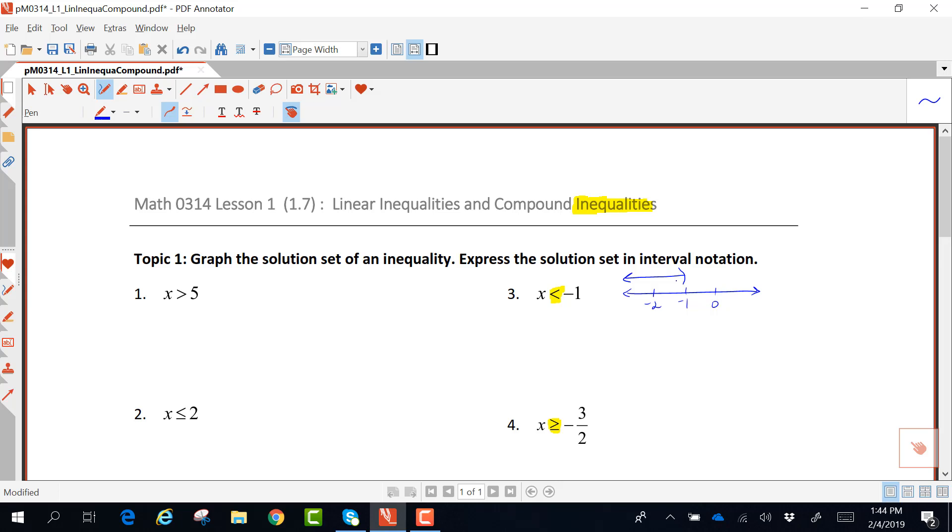To write this in interval notation, the leftmost side of my graph is pointing left toward negative infinity. The rightmost side is my negative 1. In interval notation, you can only put a parenthesis on negative infinity. At the number negative 1, it is also parenthesis, again indicating negative 1 is not a solution. This representation is interval notation, or written as an interval.